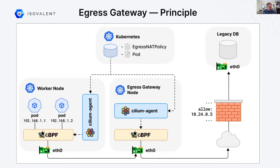The egress gateway node will know that the traffic comes from the pod, will know to apply the egress NAT policy, and it will masquerade the IP by replacing the source IP of the pod with the source IP that is specified — either the interface IP it looks up, or the IP itself can be specified in the NAT policy. Then it will send the traffic to the legacy DB.